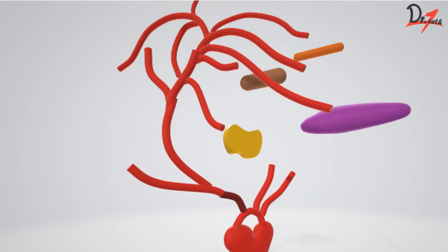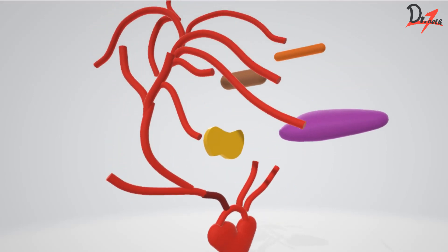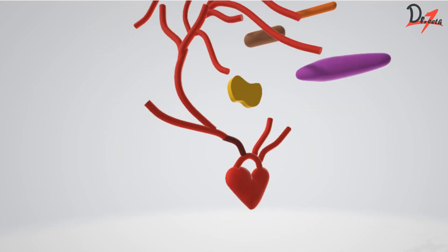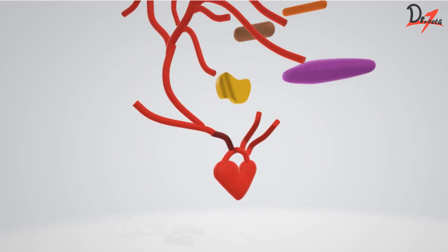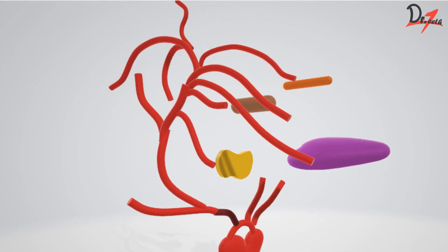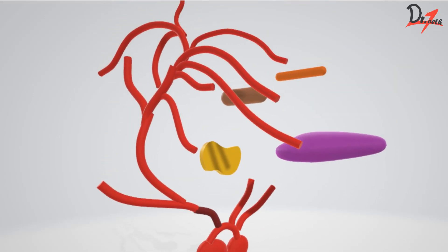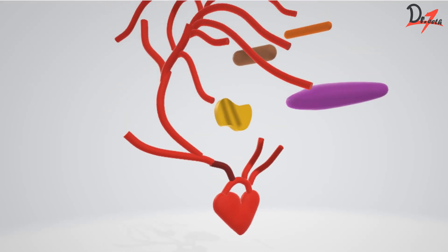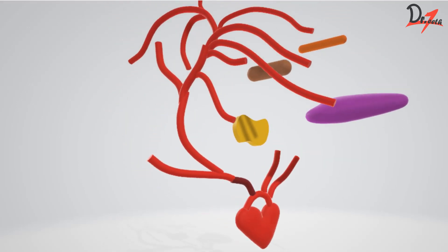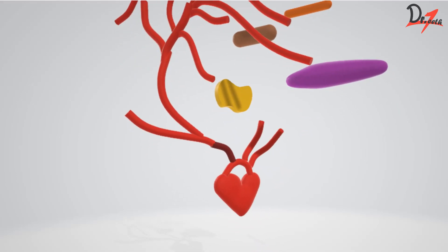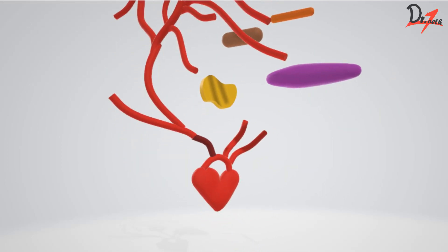Obviously, there are two common carotid arteries — one on the right side and one on the left side of the face. Now, each of them originates from the heart, but there is a bit of a difference between the left and the right carotid artery, as we will be seeing as we proceed in the video.